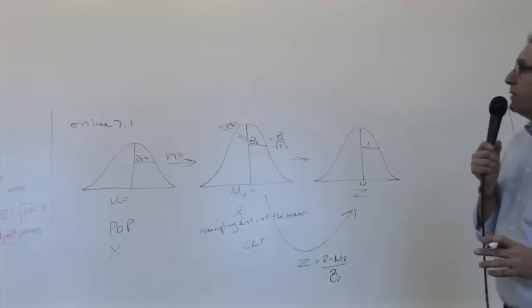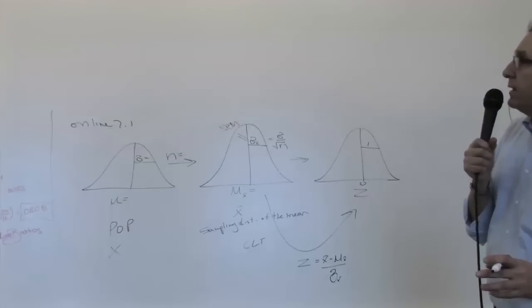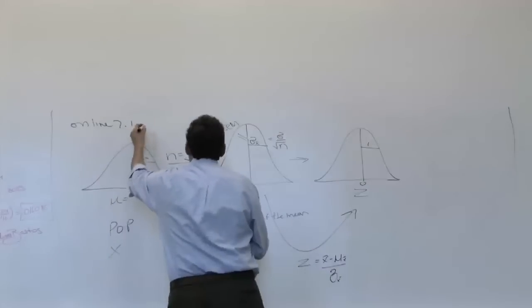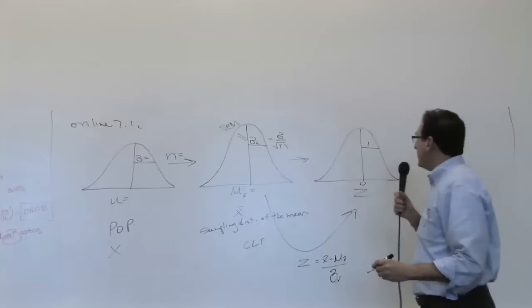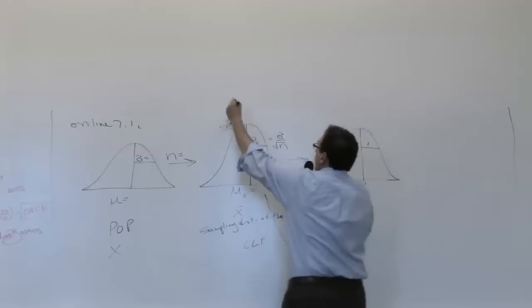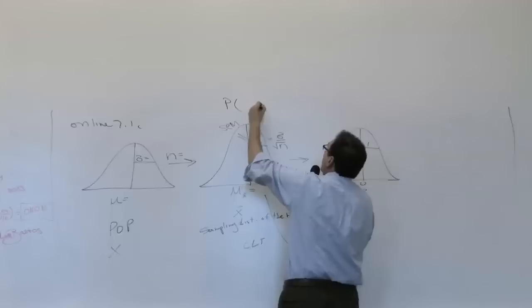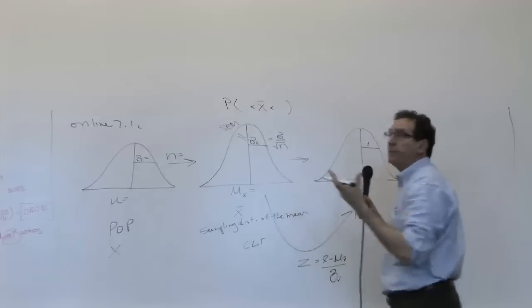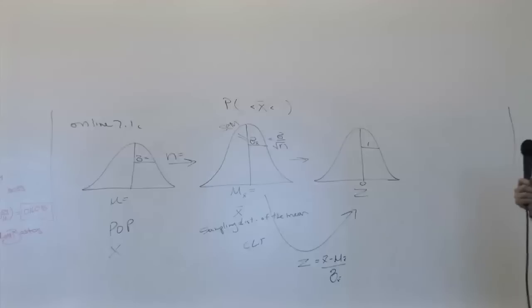So the question itself is how many x bars are either lower than some number, between some numbers, greater than some number, but it's basically a question about the x bars. That's going to be the structure of every single question. So the only question, what are the actual details that fill in this picture?